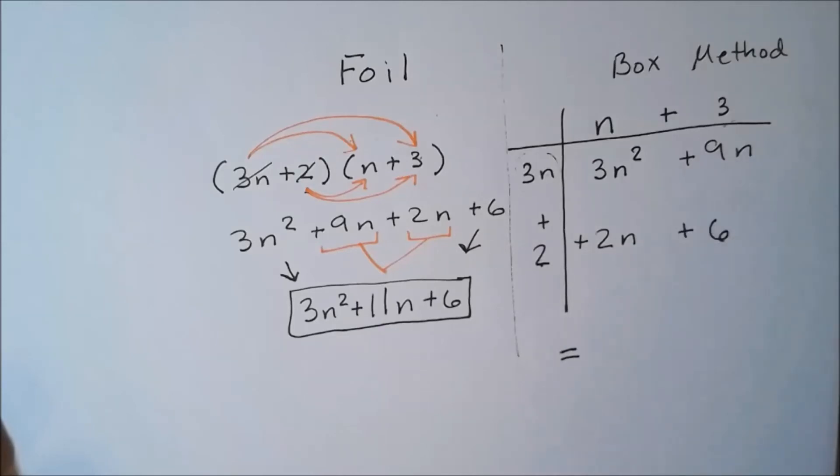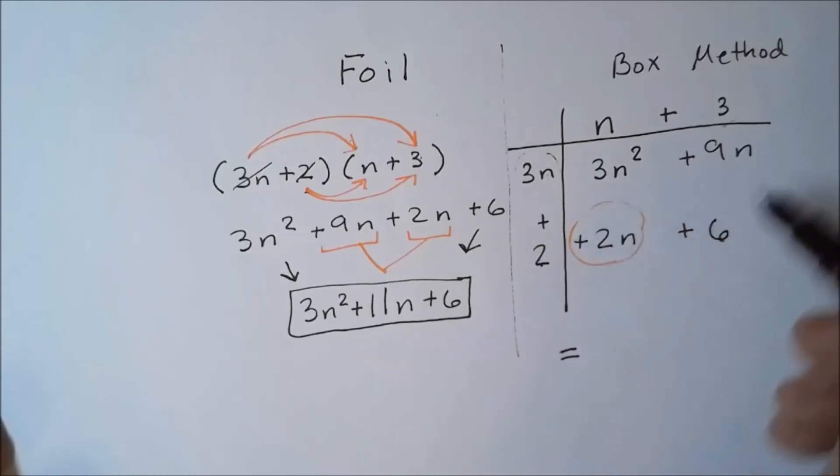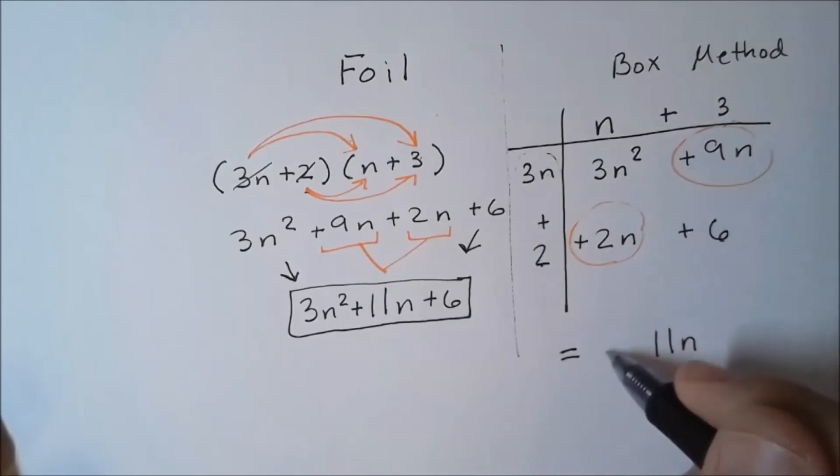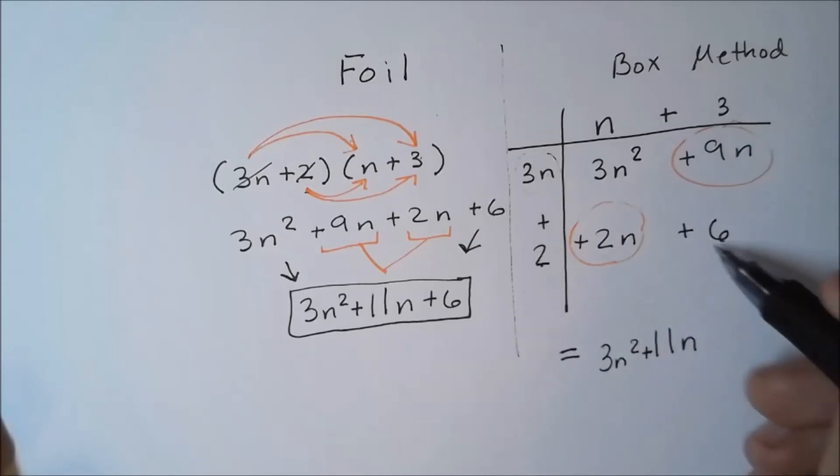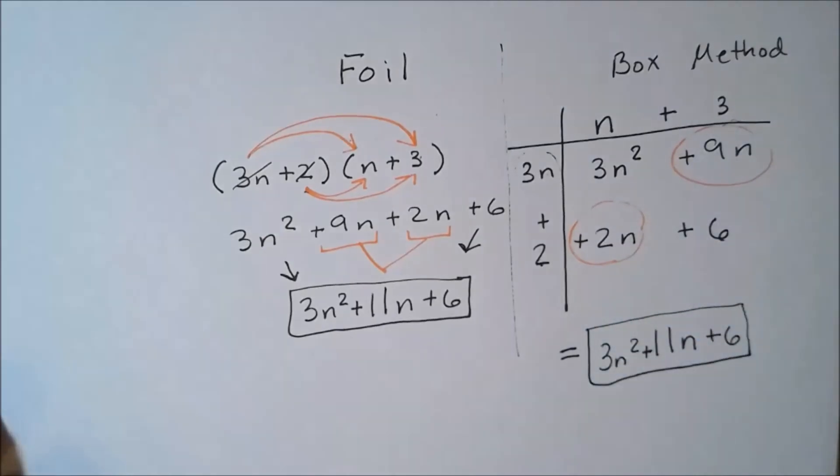In the end with the box method, we're just going to go ahead and add our like terms. My like terms are here and here, and that's going to give me 11n, and we put that in the middle. I'll bring down my 3n squared and then I'll bring down my positive 6.